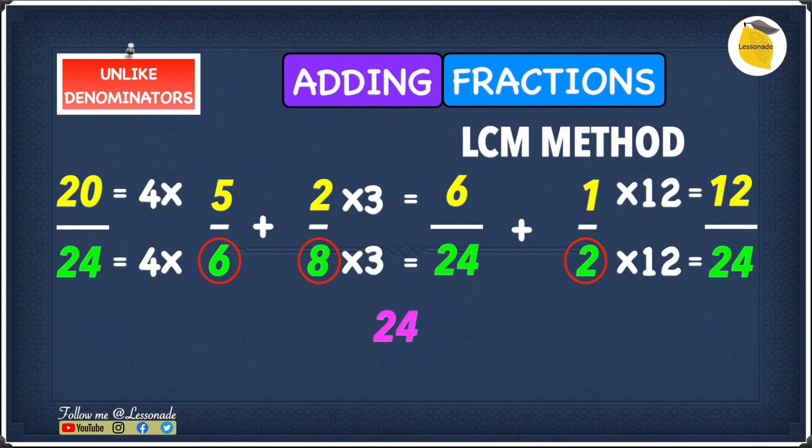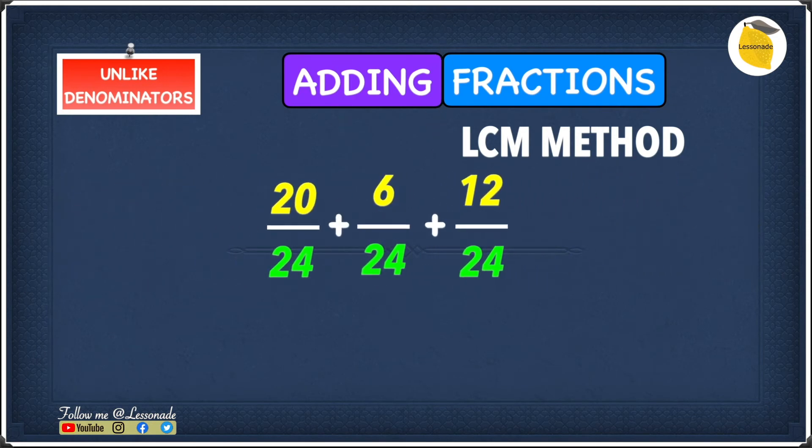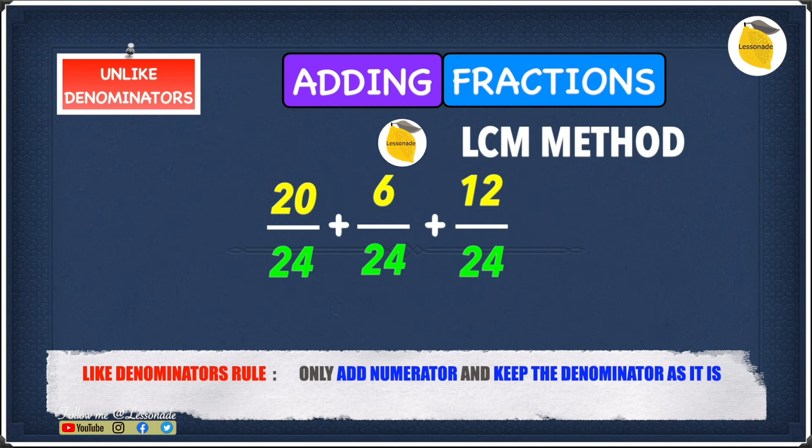Now we only have to keep 20 over 24, 6 over 24 and 12 over 24. So now we have to add 20 over 24 plus 6 over 24 plus 12 over 24. And as you guys could see right now all the denominators are common. So this means we only have to add the numerators.